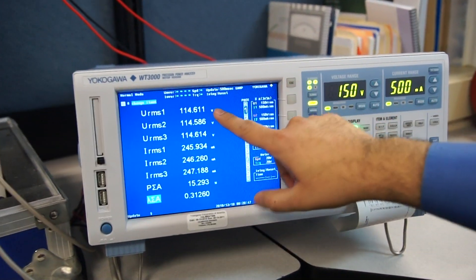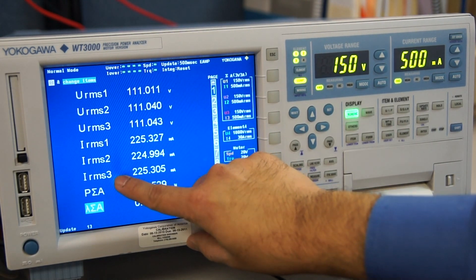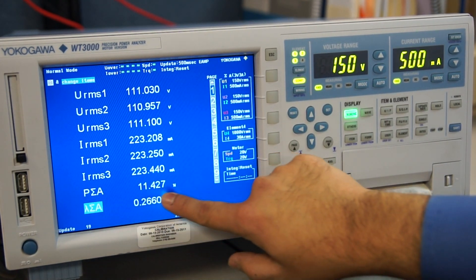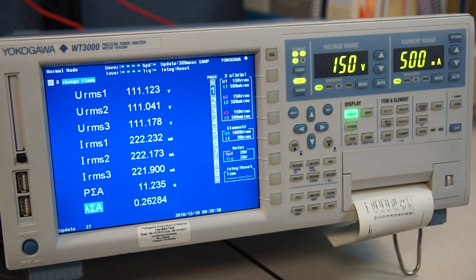And here you can see you have your three-phase voltages and you also have your three-phase currents. They all look fine. This also tells you what your total power is. It tells you what your total power factor is.